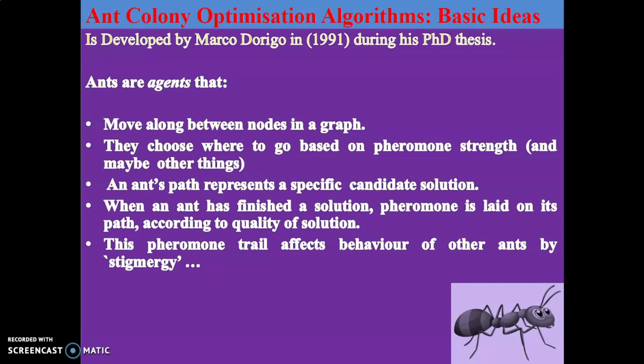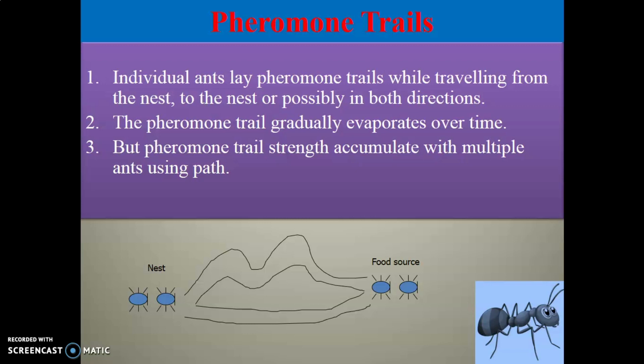An ant's path represents a specific candidate solution. When ants go from source to destination, every ant's path is represented as a candidate solution. When an ant has finished a solution, pheromone is laid down on its path according to the quality of the solution. This pheromone trail affects the behavior of other ants through stigmergy. Individual ants lay pheromone trail while traveling from nest to food source, possibly in both directions. The pheromone trail gradually evaporates over time, but pheromone trail strength accumulates with multiple ants using the same path.